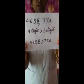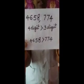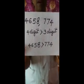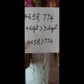One more example. See here: four thousand six hundred and fifty-eight and seven hundred and seventy-four. The first one is a four-digit number. The second one is a three-digit number. So a four-digit number is always greater than a three-digit number. We can say that four thousand six hundred and fifty-eight is greater than seven hundred and seventy-four.